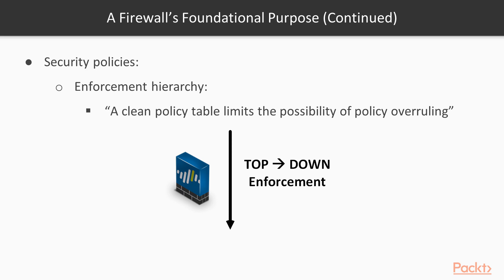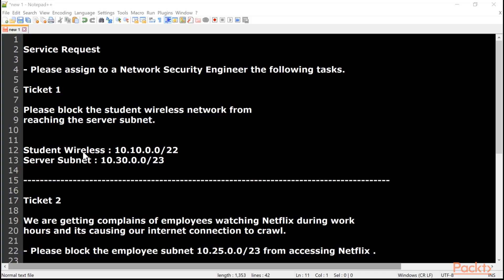We have to take a look at security overruling — that's a huge item we need to discuss. Let's begin taking a look at the security policy tables. We're going to configure those security policies in a way that looks like the real deal — this is a day-to-day task for a network security engineer. You'll be assigned tickets and we're going to do each one, and you'll see how to configure policies based on the scenario.